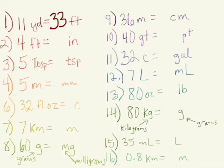For number two, four feet equals how many inches? There are twelve inches in one foot. So basically we have four groups of twelve or forty-eight inches.